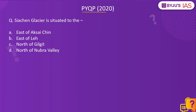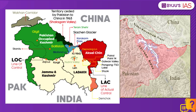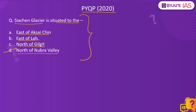Now, a question from the 2020 prelims paper: Siachen Glacier is situated to the — A: east of Aksai Chin, B: east of Leh, C: north of Gilgit, D: north of Nubra Valley. The correct answer is option D. For such map-based questions, familiarity with the geography of important locations helps. The Gilgit-Baltistan region under Pakistani occupation lies to the west of Siachen; Aksai Chin under Chinese occupation lies to the east; Leh is to the south; and the Nubra Valley is also to the south of Siachen. So option D is correct.